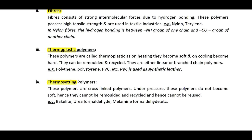Thermoplastic polymers have the property of plasticity — becoming soft on heating and hard on cooling. They can be remolded and recycled because on heating they become soft and can be shaped into different forms. They can be either linear or branched chain. Examples include polythene, polystyrene, PVC (polyvinyl chloride), etc. PVC is also used as synthetic leather.